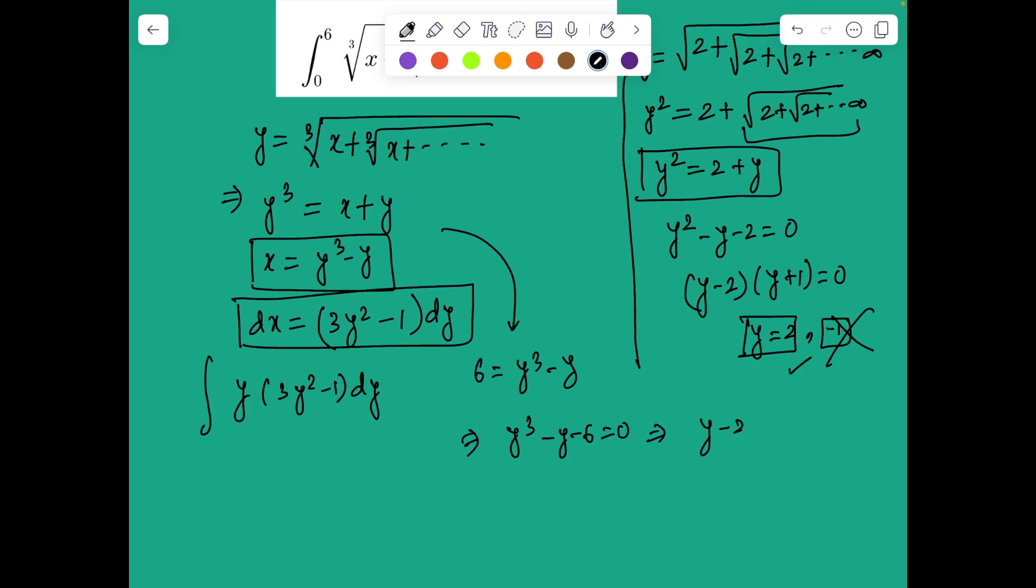Which is easy to see will have one value as 2. So y minus 2 times y squared plus something y plus 3 is going to be 0. You can compare to find this hash that will give discriminant less than 0. So the only real solution is y equals 2.